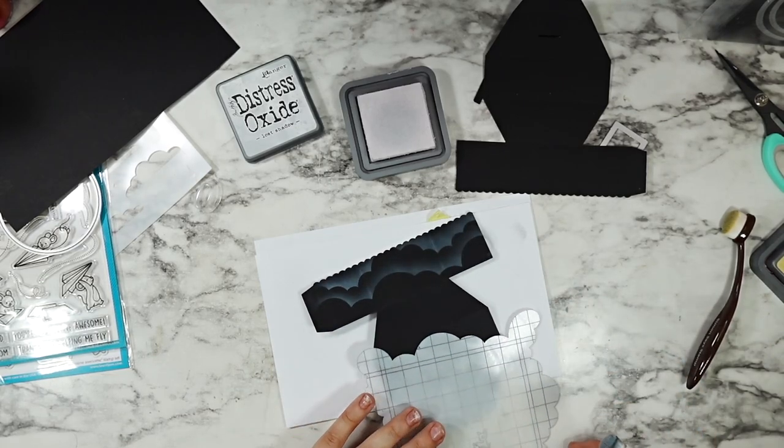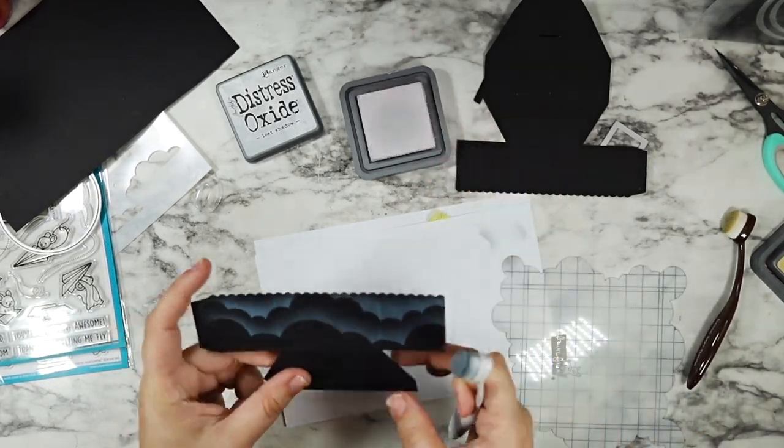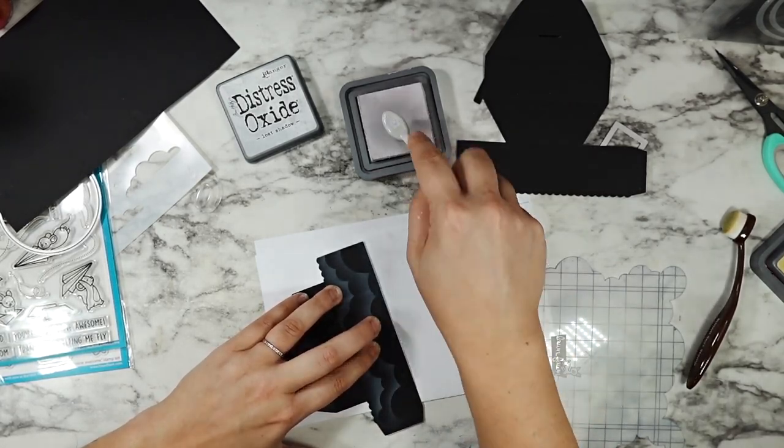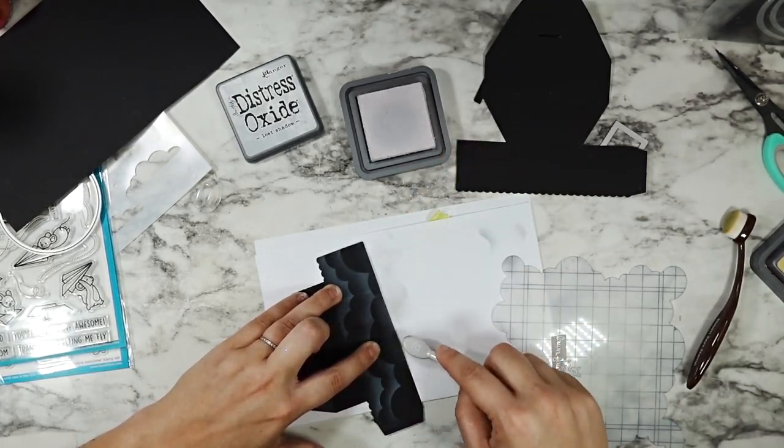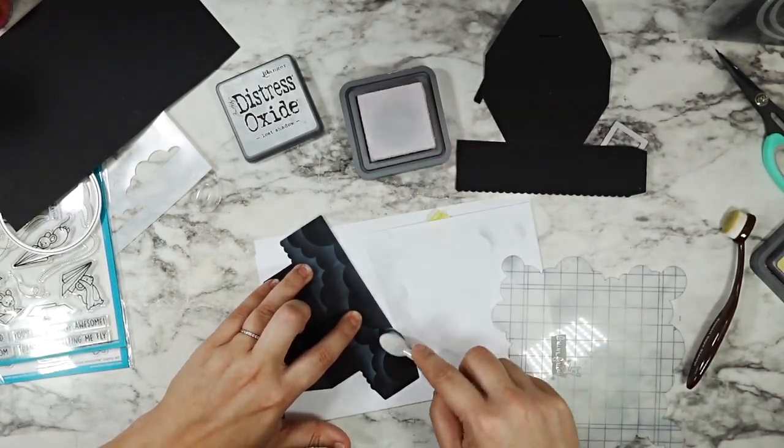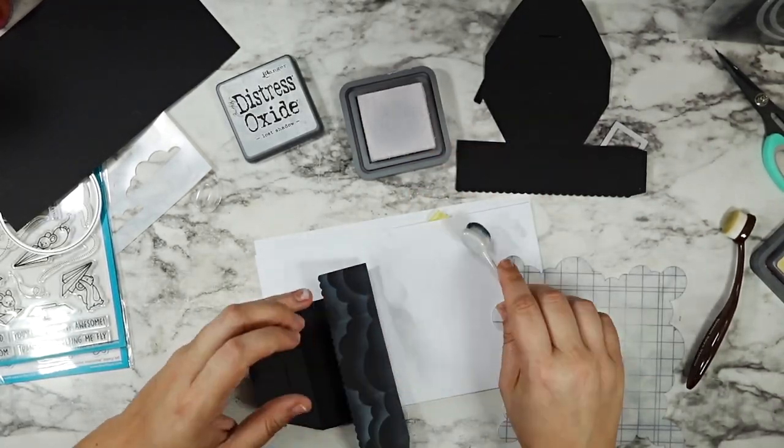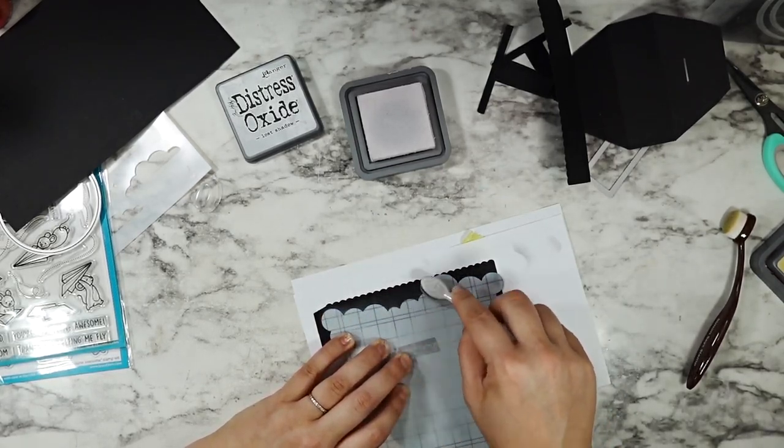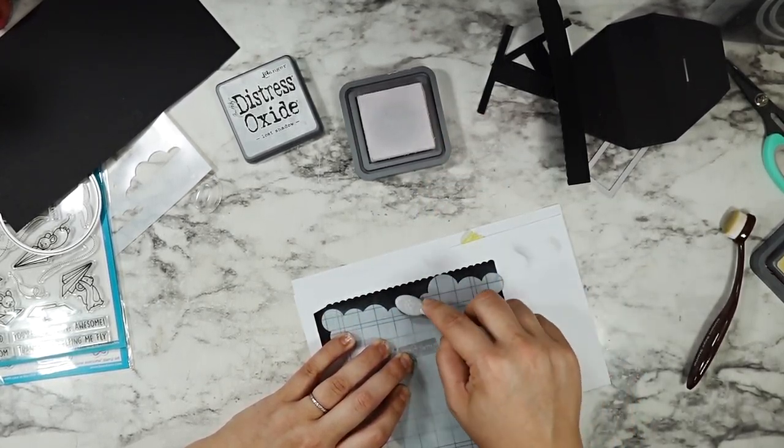And then I'm also going to add a little bit of ink just to the bottom section, kind of where the die gives you a score line to fold. That's going to be the part that sits on the table or your surface. So I added just a little bit of color there as well so that it wasn't just stark black at the bottom.